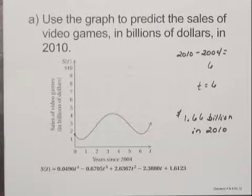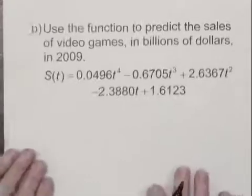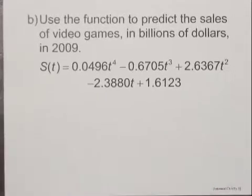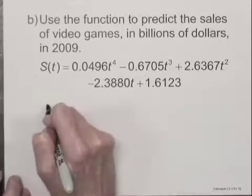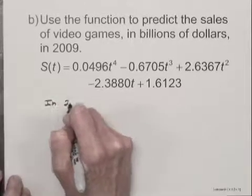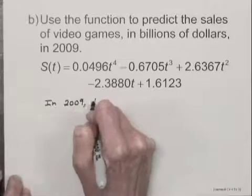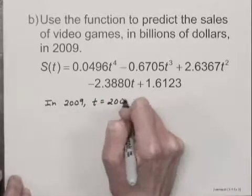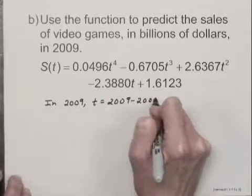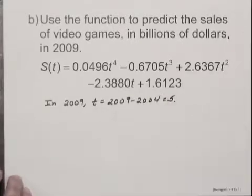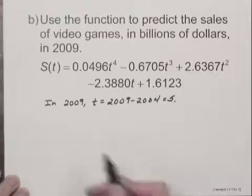Now we're asked to find something else here, too. We'll use the function to predict the sales of video games in billions of dollars in 2009. In 2009, t is going to be equal to 2009 minus 2004, or 5. In other words, 2009 is five years after 2004.